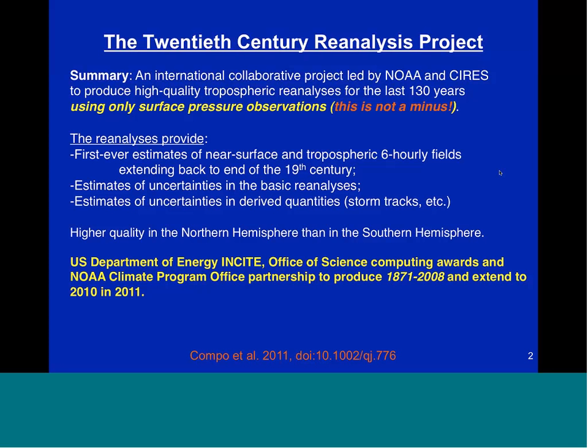Surface pressure's time tendency tells you about the divergence of mass from that column. As soon as you have two surface pressure observations, you know something about the wind through geostrophy and about the vertical distribution of the wind through the thermal wind. If you have some guess as to the distribution of temperature, you can advect that temperature and derive even more information. Those are the physics we're using to do this reconstruction.